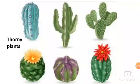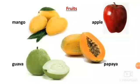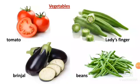Plants give us so many things. You very well know that the vegetables, fruits, cereals, and pulses that we eat, we get from plants. Mango, apple, guava, and papaya are some of the fruits that we eat. We also eat the fruits of some plants as vegetables, such as tomato, lady's finger, brinjal, beans, etc.